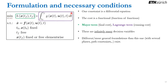The cost in an optimal control problem is a functional — a function of functions — because it depends on x of t and u of t. This cost has two terms: the final cost, called the Mayer term, and a running cost from initial to final time, called the Lagrange term. There are many more general formulations, but for this tutorial we stick with this simple one.